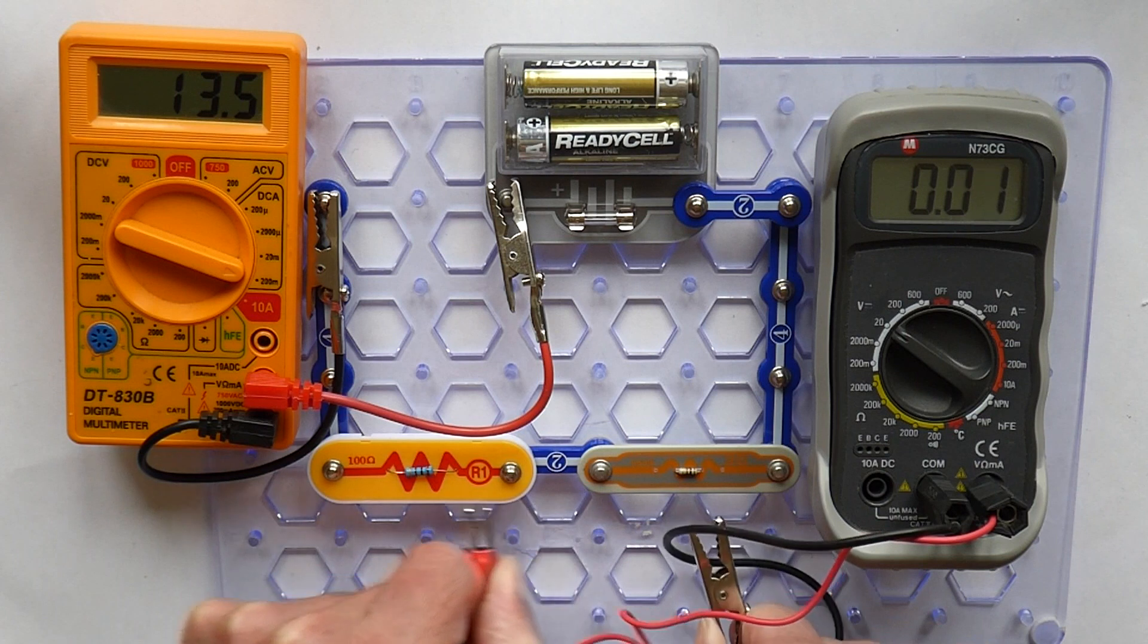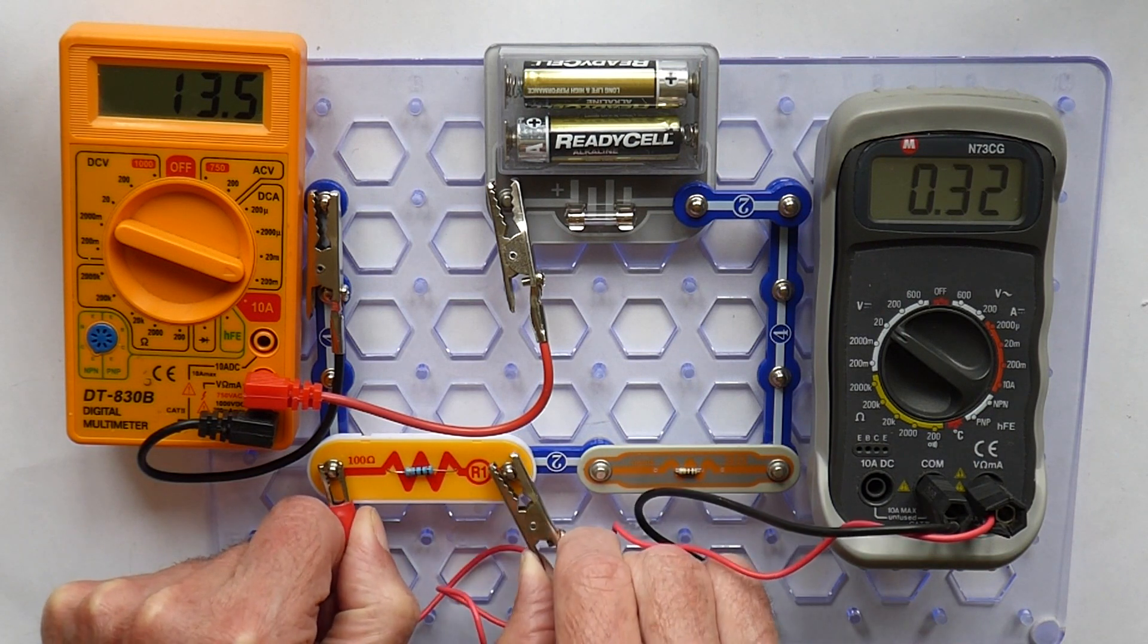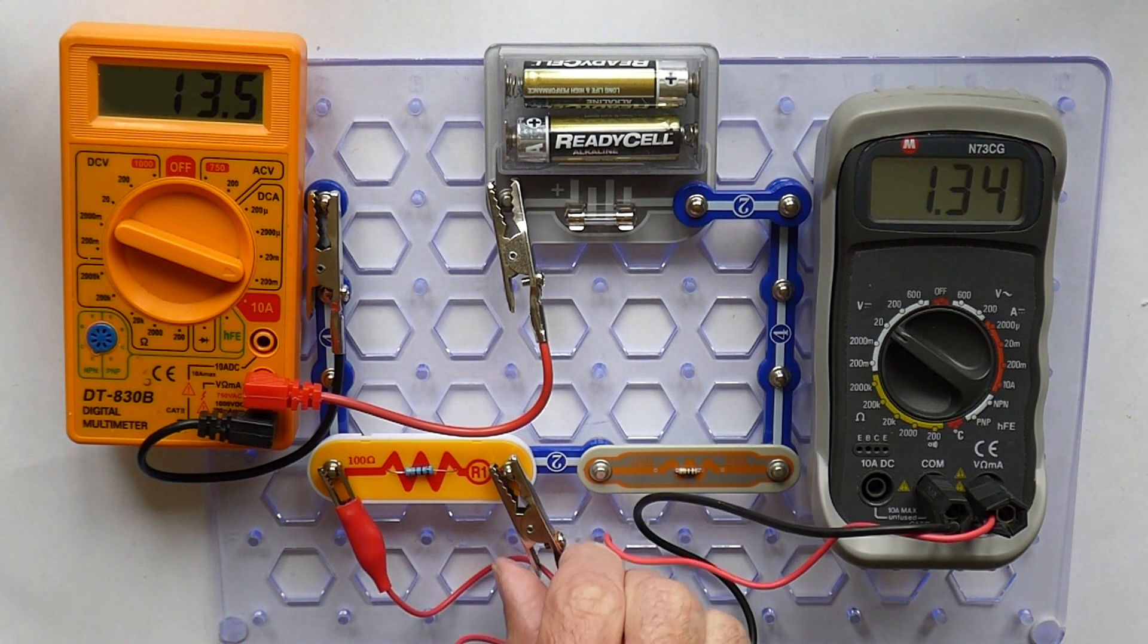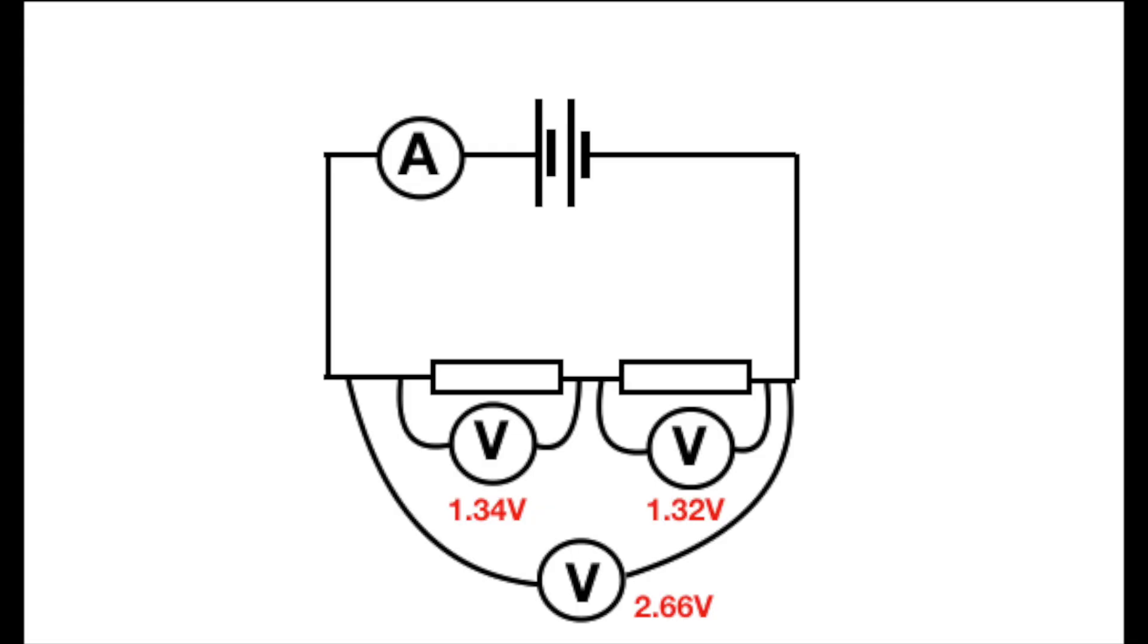Moving the voltmeter so it is across the right hand resistor, the potential difference is 1.32 volts. Across the left hand resistor, 1.34 volts. Writing these results onto the circuit diagram reflects that the resistors are at least nominally equal, and the two voltage measurements are equal. What these resistors have done is split the potential difference into two equal parts.